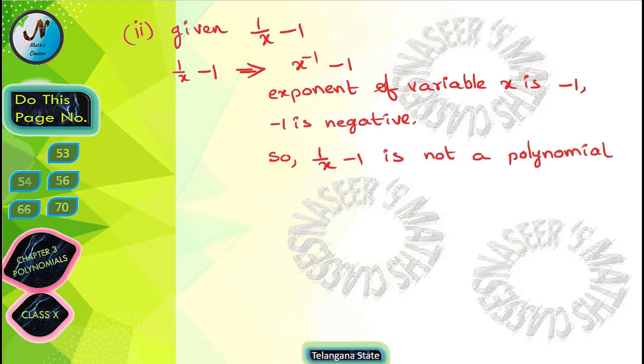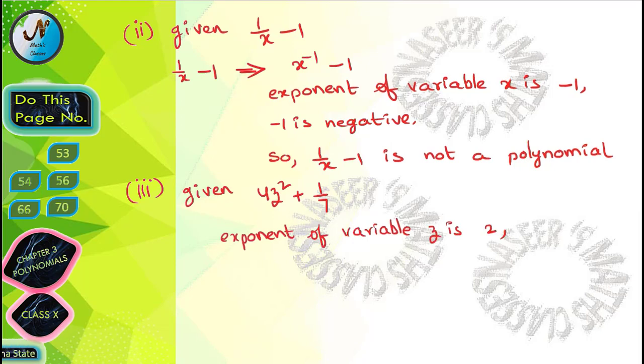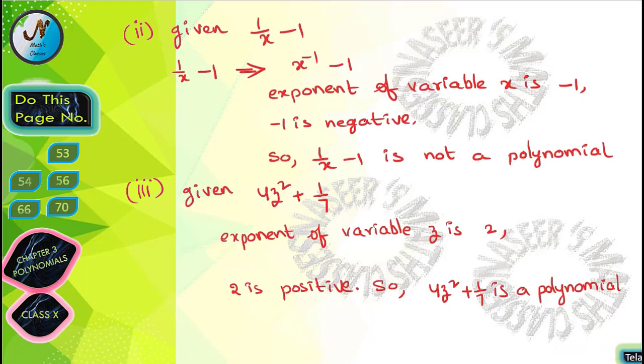Next third one, given expression is 4z² + 1/7. So here the exponent of variable z is 2. So 2 is a positive, that's why 4z² + 1/7 is a polynomial.